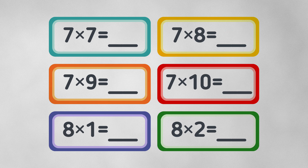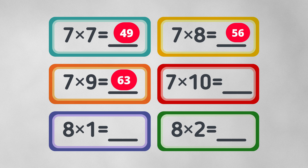Seven times seven equals forty-nine. Seven times eight equals fifty-six. Seven times nine equals sixty-three. And seven times ten equals seventy.